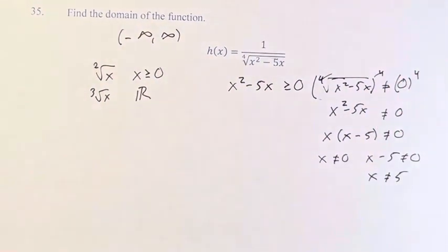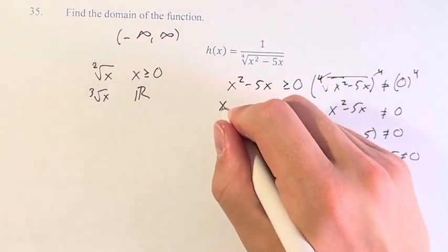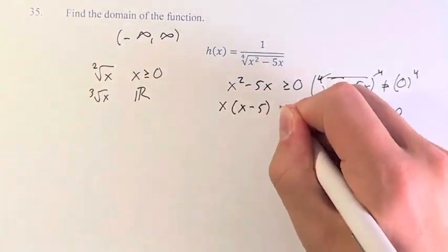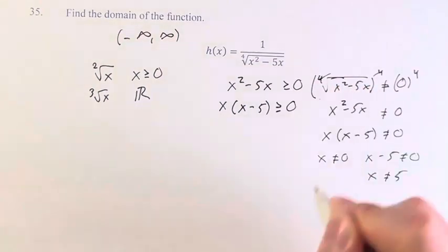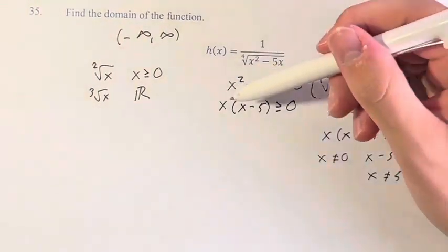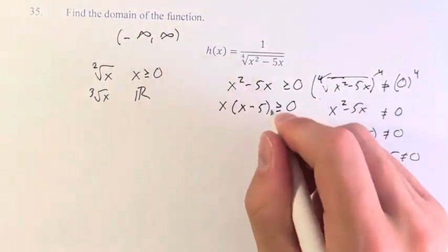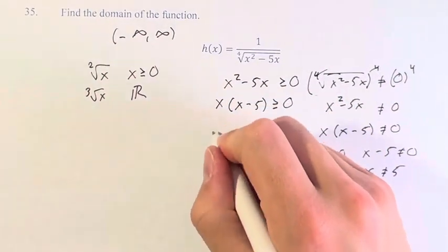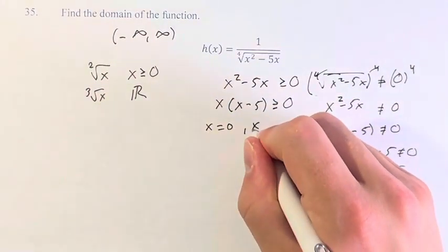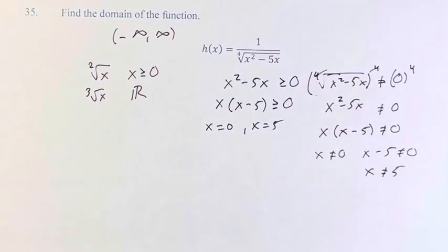So already, we have two values that we've knocked out. And here, we have to deal with this inequality. So we have a similar thing. x times x minus 5 is greater than or equal to 0. And we have to take these two zeros of this function, x is equal to 0 and x is equal to 5, which we've already found down here.